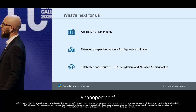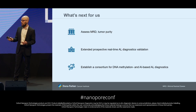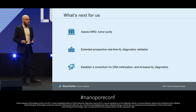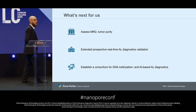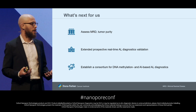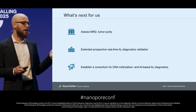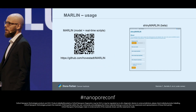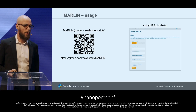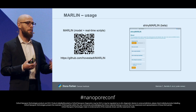What's next for us? The main challenge to address is tumor purity: if there is not enough tumor DNA in the sample, we get a control class — which could also be relevant for minimal residual disease monitoring. We want to extend the prospective cohort and do more real-time classification; a study is already approved and will start soon. We also want to establish a DNA methylation and AI-powered acute leukemia diagnostics consortium, and I'd like to invite you to use MARLIN. The GitHub repository has the model and all scripts for real-time classification, and we have a beta web app where users can upload methylation calls and receive predictions in minutes.